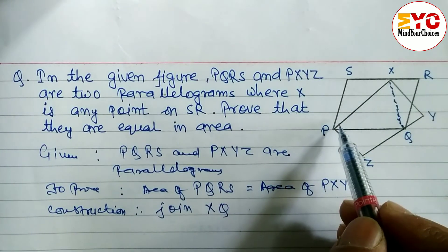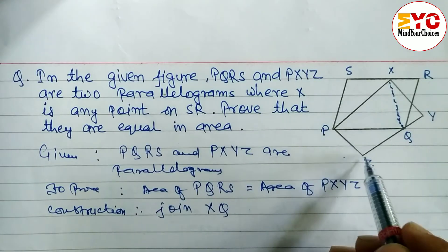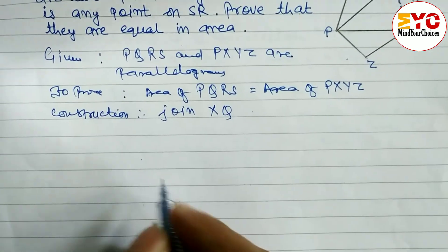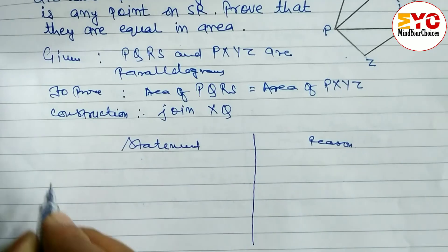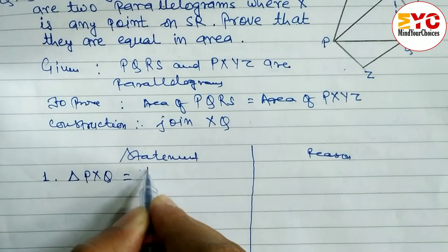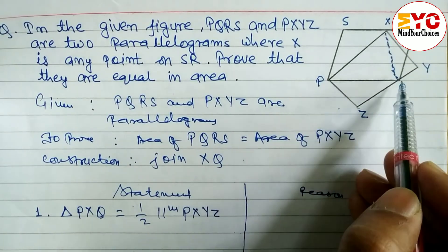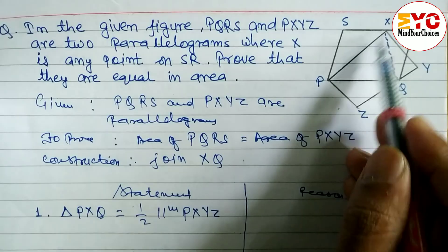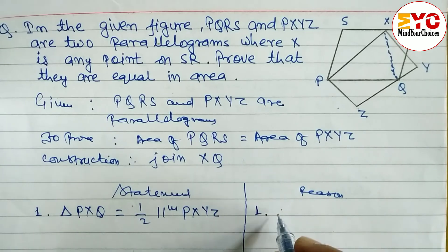We know that the area of a triangle is half of the parallelogram. Now we write statement and reason. Statement 1: Triangle PXQ is equal to half of parallelogram PXYZ, because triangle PXQ and parallelogram PXYZ are standing on the same base PX between the same parallels.